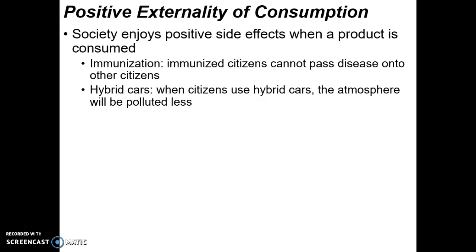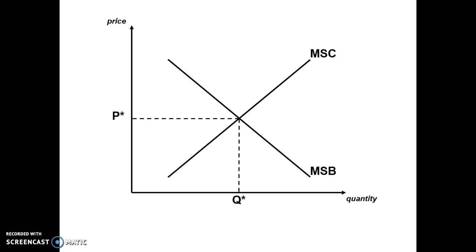Hybrid cars are another example. Individuals don't always want hybrid cars — maybe they prefer a bigger car that fits more people or carries more things. But when hybrid cars are used, the atmosphere is polluted less, so society would benefit from more of them. The reason positive externalities of consumption occur is that the personal benefit is less than society's benefit. We show this by drawing an MPB curve (marginal personal benefit) to the left of MSB (marginal social benefit).